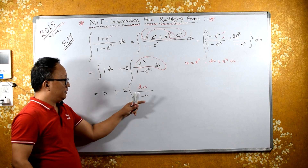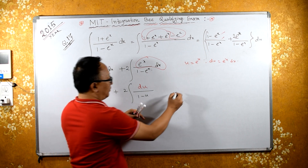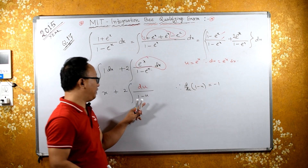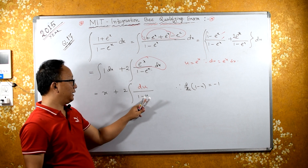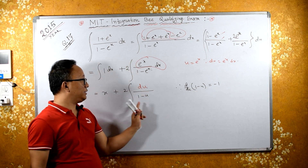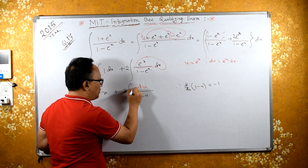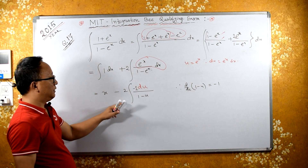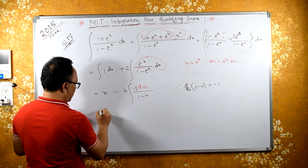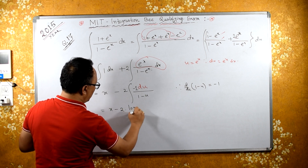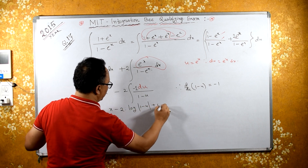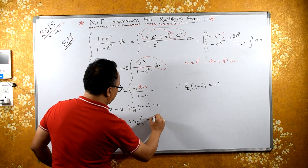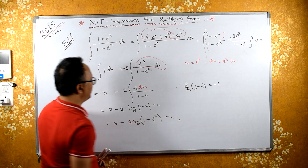Be careful here — the differentiation of the denominator: d/du of (1 minus u) is minus 1. Most students make a mistake here. We have plus 1 in the numerator but the derivative of the denominator gives minus 1, so we need a minus sign. Therefore, the integral gives x minus 2 times log of (1 minus u) plus C, which is x minus 2 times log of (1 minus eˣ) plus C.